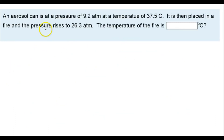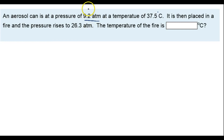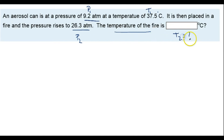In this problem here, it says an aerosol can is at a pressure of 9.2 atmospheres at a temperature of 37.5 degrees Celsius. It is then placed in a fire and the pressure rises to 26.3 atmospheres. We want to know the temperature of the fire in degrees Celsius. Inside the can is a gas exerting that pressure — that gives us P1 and T1. When placed in the fire the temperature increases and so the pressure increases too, according to Gay-Lussac's Law. This is a Gay-Lussac's Law problem.